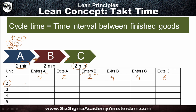The second unit enters sub-process A at time two — because up until time two, A is still occupied by the first unit. It exits at time four. At time four, it can immediately go on to sub-process B because sub-process B is now vacant. It stays for two minutes and exits at time six. The time interval between the first and second unit being finished is two minutes, so the cycle time is two minutes.